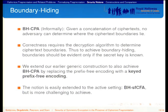Informally, we define boundary hiding as: given a concatenation of ciphertexts, no adversary can determine where the ciphertext boundaries lie. Immediately, we can notice a conflict, because the correctness requirement means the decryption algorithm needs to determine where ciphertext boundaries are in order to decrypt correctly, but we want to hide those boundaries from the adversary. The only way to accommodate both is to make ciphertext boundaries evident only to someone who knows the secret key. With this intuition, we can extend our original construction and replace the prefix-free encoding with a keyed prefix-free encoding — a family of prefix-free encodings — which gives us boundary hiding in the passive case.